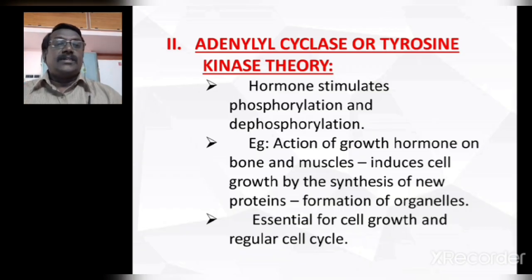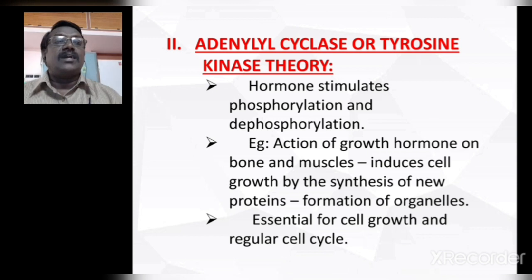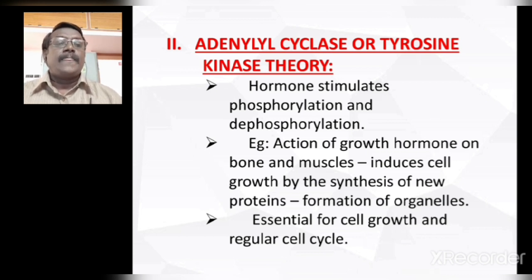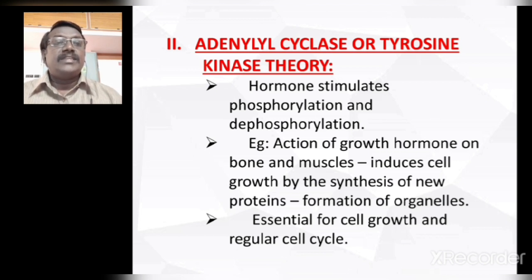The second mechanism is the adenylyl cyclase or tyrosine kinase theory. In the previous diagram, I showed you the oval-shaped catalytic unit called adenylyl cyclase. This adenylyl cyclase undergoes very important reactions called phosphorylation and dephosphorylation. These reactions are very essential especially during the growth of the cell — at the time of the cell cycle — and are mediated by adenylyl cyclase or tyrosine kinase and inherent enzymes always attached with the G-protein.